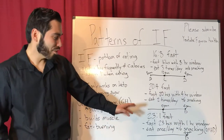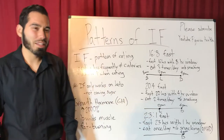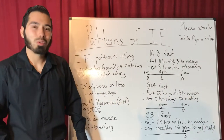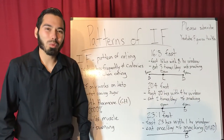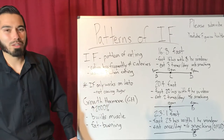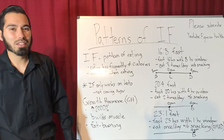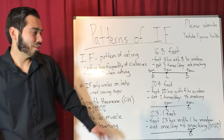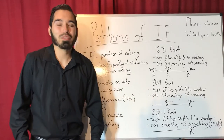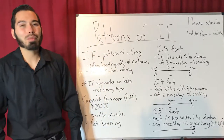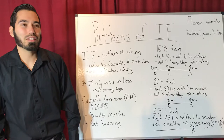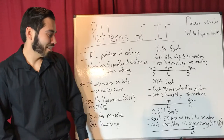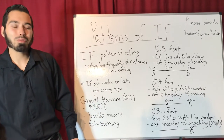There's also a 23 hour fast, meaning you fast for 23 hours with a one hour eating window. That's equivalent to someone eating once a day without snacking — also known as OMAD. When people say they're doing OMAD, that means they're eating one meal a day.